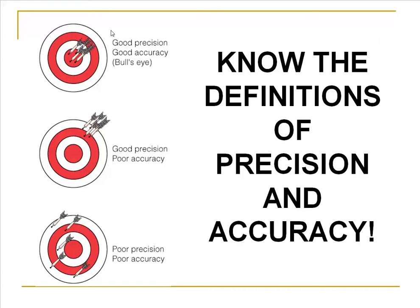For instance, a lab analyst working with a company could have really good precision, meaning they could reproduce their result every single time without a problem. However, that result might not be accurate. We see a group of darts on the dartboard that are very far away from the bullseye in the center. This represents good precision but bad accuracy.